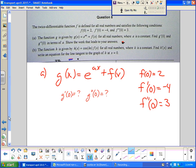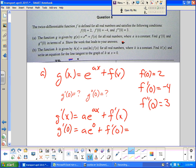So e to the x is e to the x. So this is a chain rule, e to the ax. So g prime of x would be a e to the ax, and then here the derivative of f of x is just f prime of x. Alright, so if I want to do g prime of zero and put in zero, I get a e to the zero plus f prime of zero.